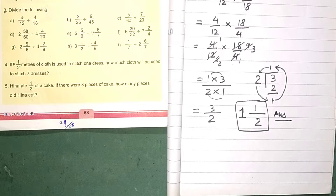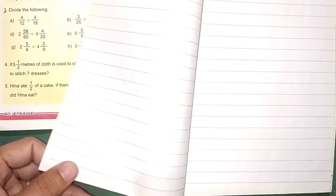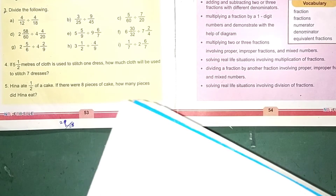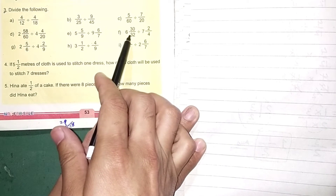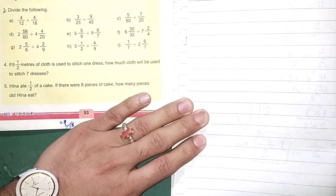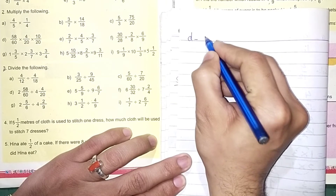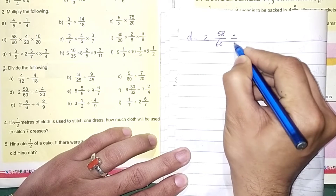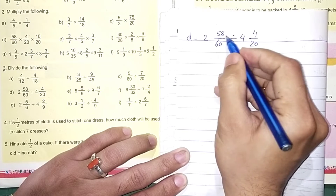As you can see in mathematics, this is the subject of the question. It will be solved. If you have a question, you can solve it. If you look at question d, we need to write this number. Question number d: the d number is 2 into 58 divided by 60, divided by 4 into 4 over 20. That's why 4 over 20, 58 over 60.